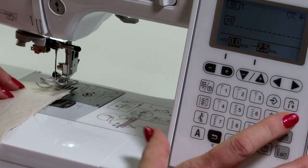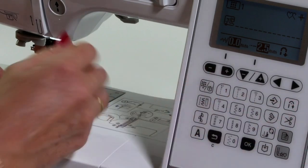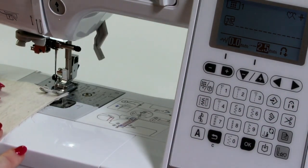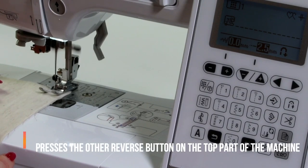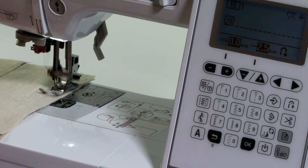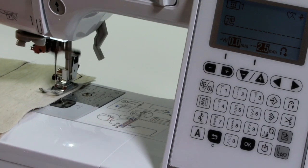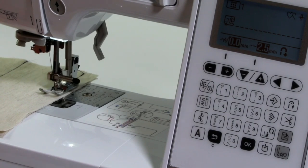So because we've got our reverse, I'm going to select my reverse here. So what it's going to do, it's going to automatically do my reverse in the beginning. And then when I'm getting to the end of my seam, I'm going to just press my reverse button here once. And it beeps and it does three stitches backwards, three stitches forwards.